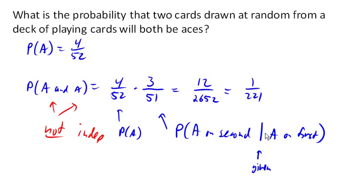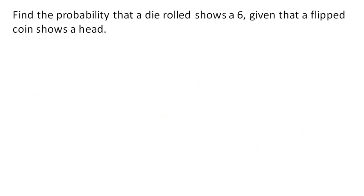Now let's look at another case. Let's find the probability that a die rolled shows a 6 given, so again, this is a conditional probability,